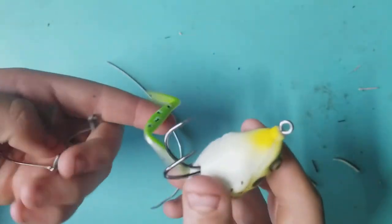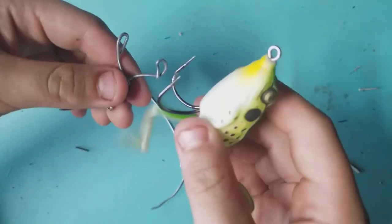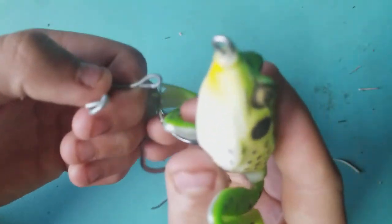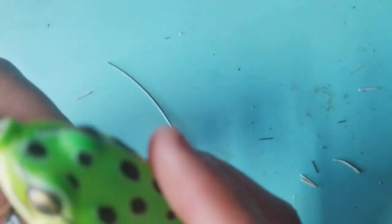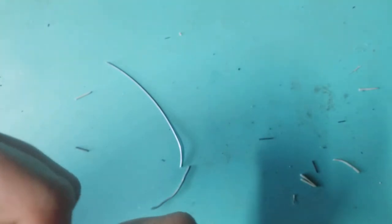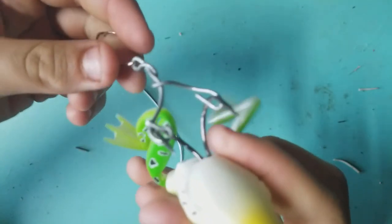Next, just take your frog and adjust the two circles you just made to fit the barbs. And then, you just slip it on like this.